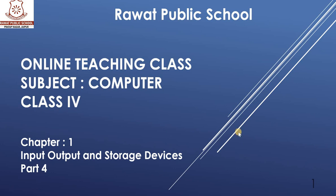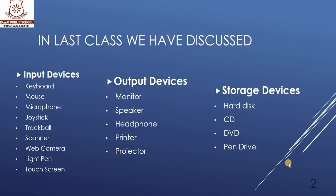In our last class we completed this chapter, so today we are going to do a revision of the topics we discussed. In our last class, we covered 3 types of devices: first is input devices, then output devices, and then storage devices.